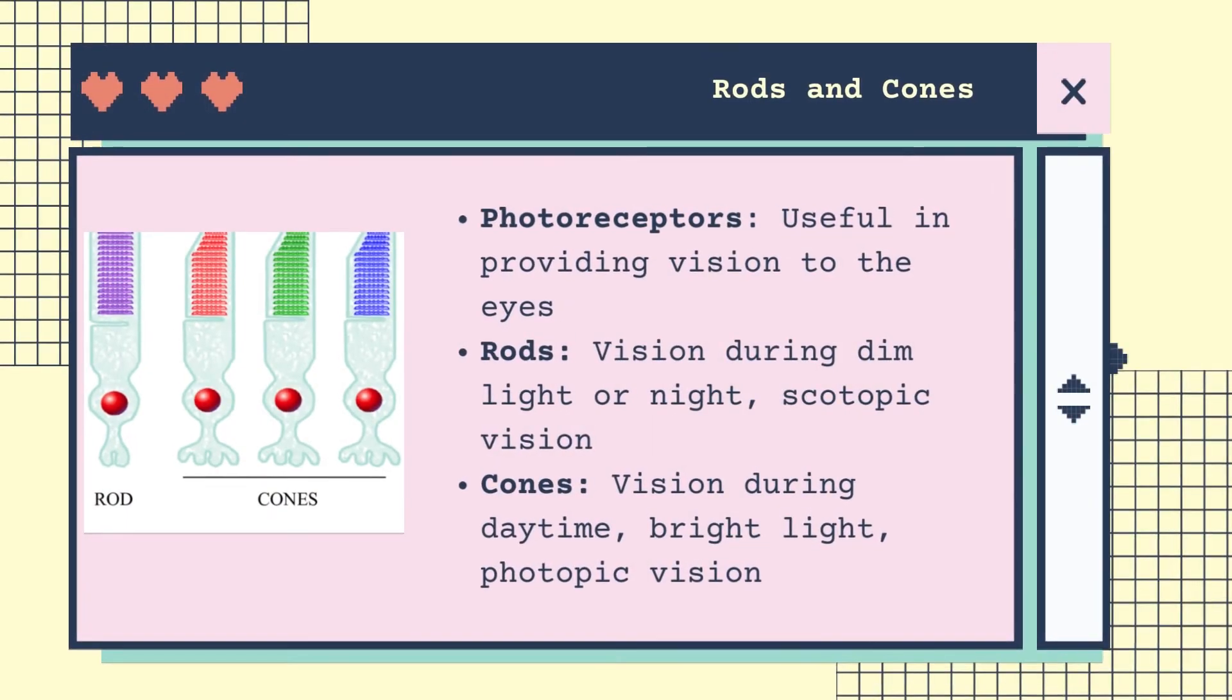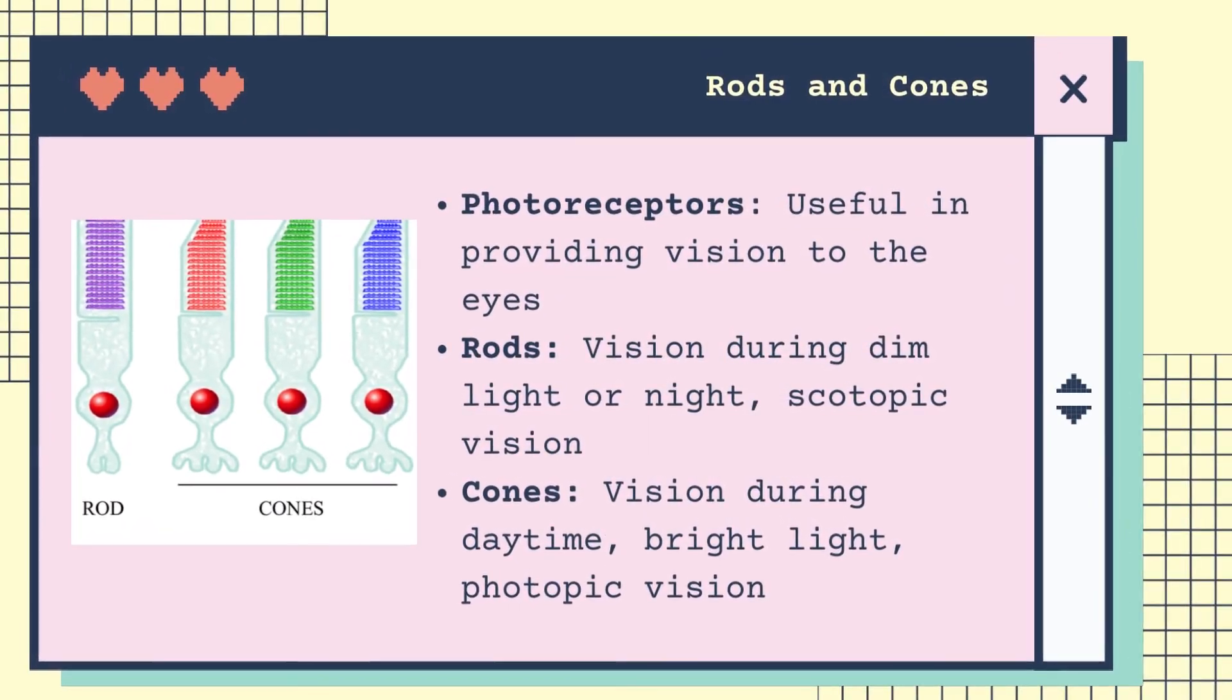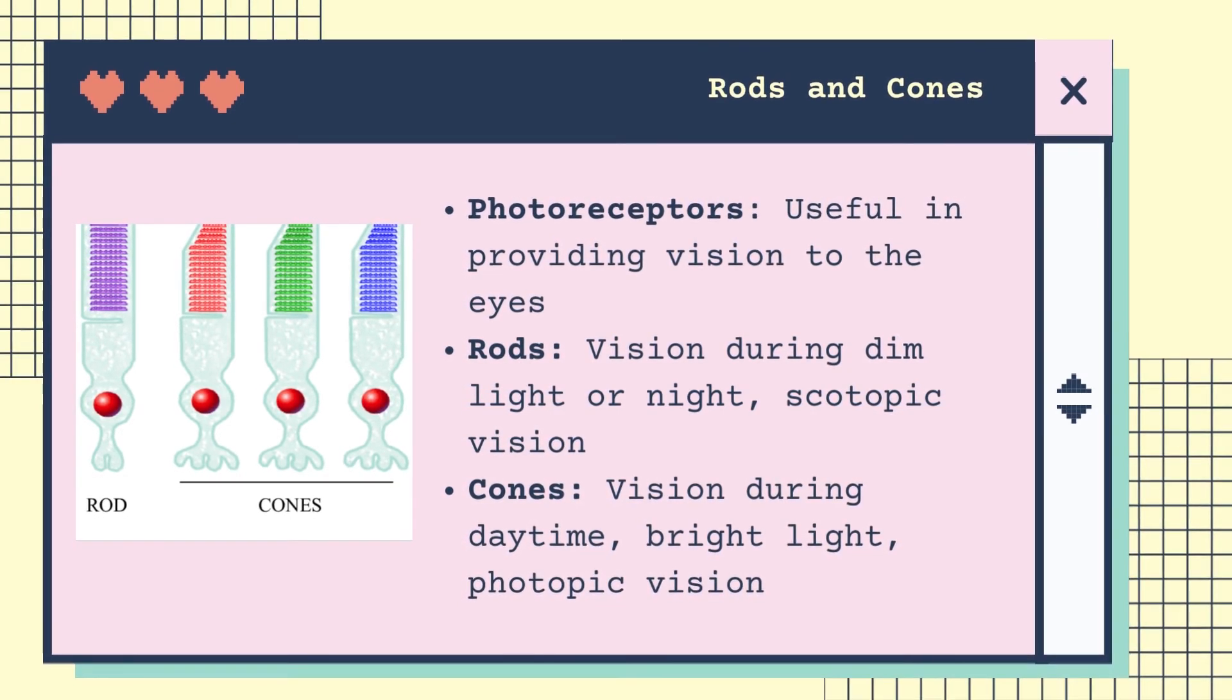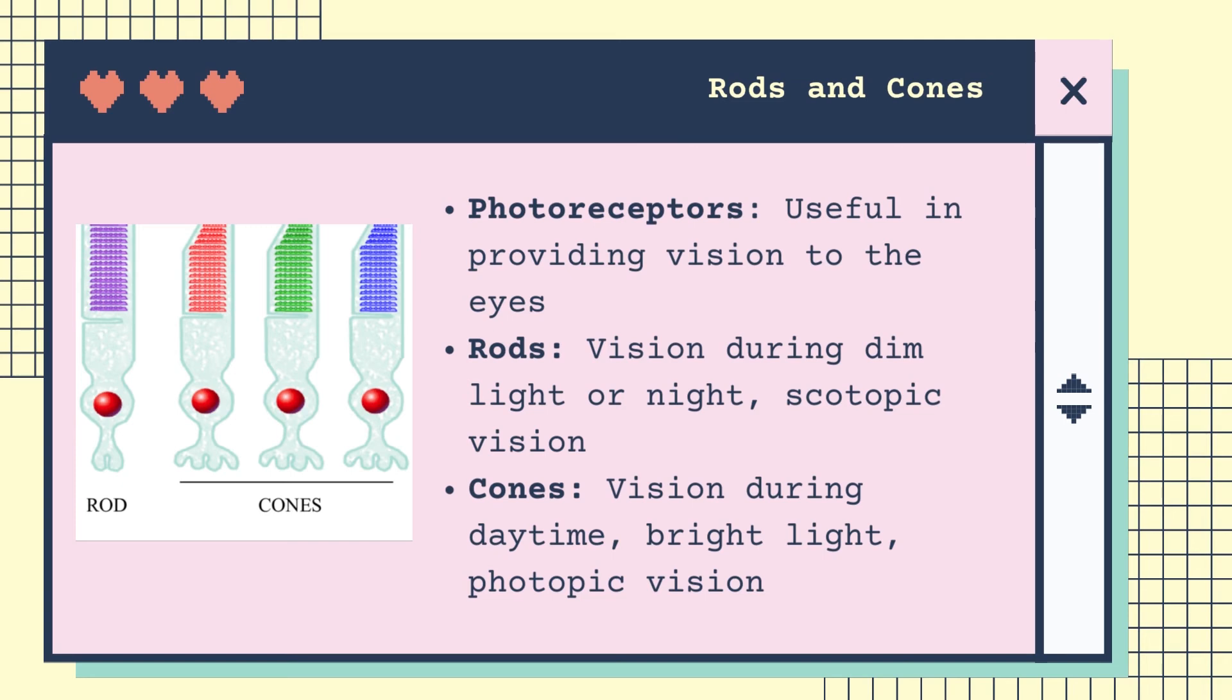Rods and cones are photoreceptors and are useful in providing vision to the eye. The rods provide vision during dim light or night, while the cones provide vision during daytime or bright light.